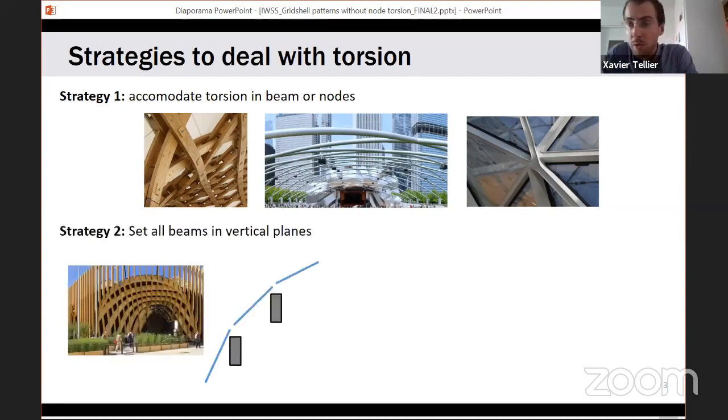A second solution to deal with torsion is to set all beams in a vertical plane. In that way there's no problem with torsion, but then you end up with high angles between your beams and your surface, and you may have architectural problems like blocking light, poor resistance to wind, and kink angles between your panels and the surface.